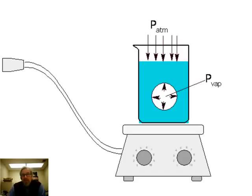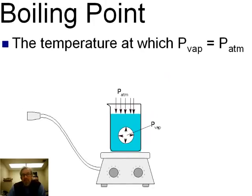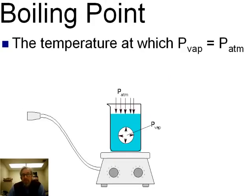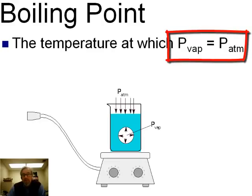When the vapor pressure is equal to the atmospheric pressure, there's enough force there that it can push back against the atmosphere and create those bubbles. And so the boiling temperature, or the boiling point we say, is the temperature at which the vapor pressure is equal to the atmospheric pressure.